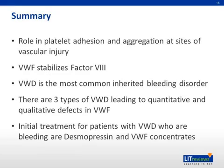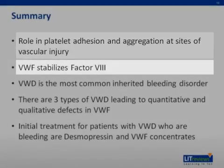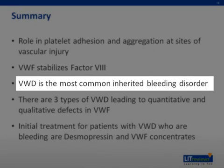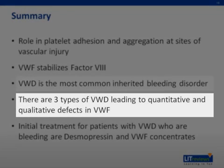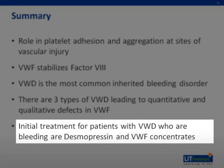In summary, von Willebrand factor plays a very important role in platelet adhesion and aggregation at sites of vascular injury in normal physiology. Von Willebrand factor stabilizes factor VIII. Von Willebrand disease is the most common inherited bleeding disorder. There are three subtypes of von Willebrand disease leading to qualitative as well as quantitative defects in von Willebrand factor. Initial treatment for patients with von Willebrand disease who are bleeding includes desmopressin and von Willebrand factor concentrates.